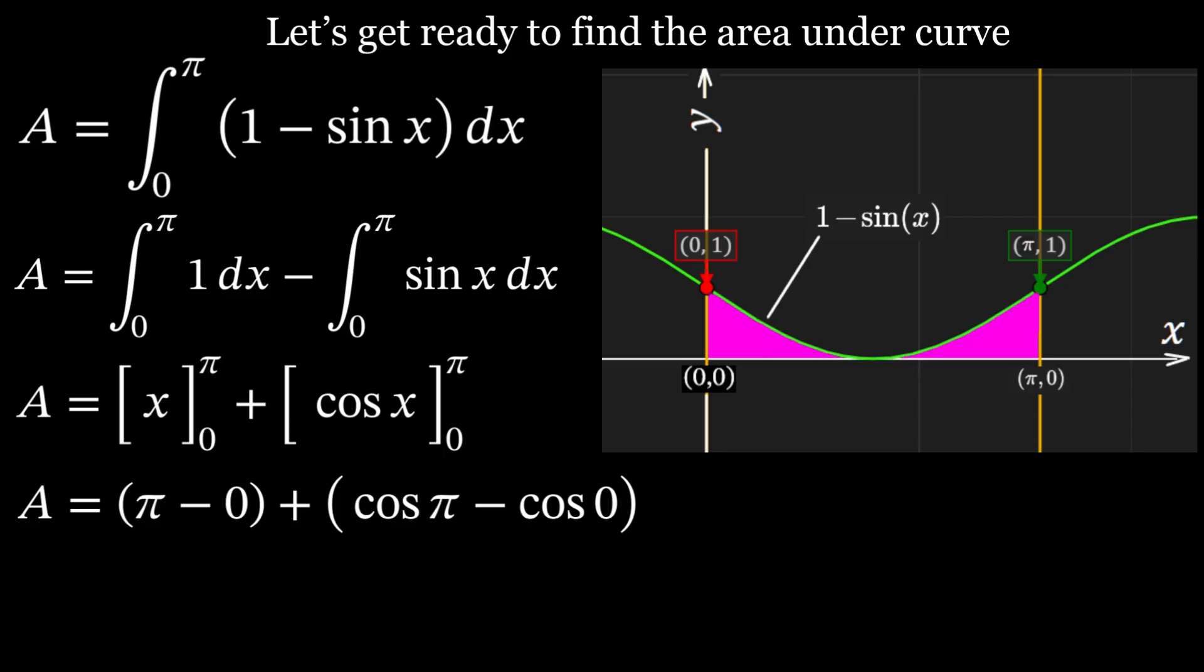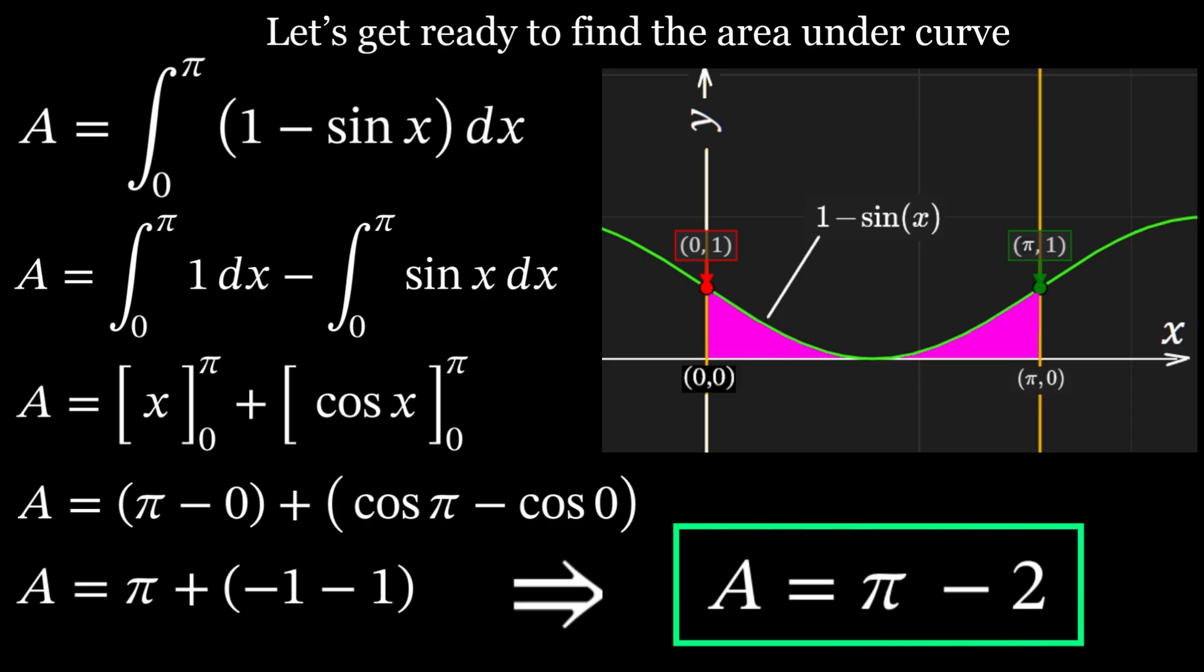Cosine of pi is negative one, and cosine of zero is one. Substituting again gives area A equals pi plus negative one minus one. Therefore, area A equals pi minus two.